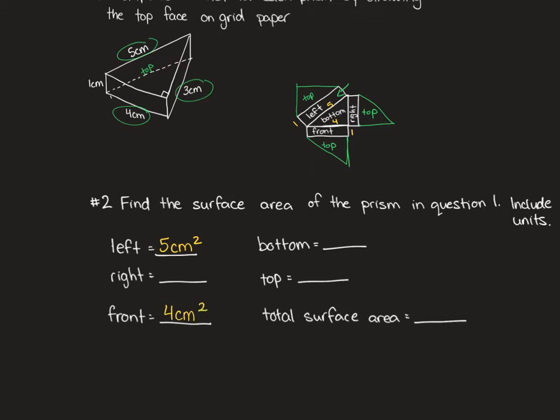Now, I know I haven't gone in order, so you just have to make sure that you fill in the right pieces. The right side is three by one. So what would the area be? The right would be three centimeters squared.